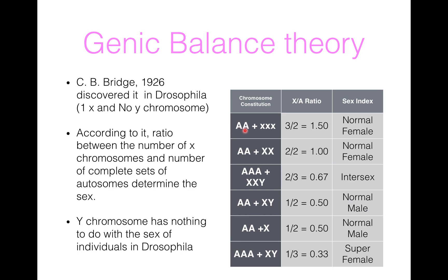Now we will understand the table. With two complete sets of autosomes (2A) and 3X chromosomes, the ratio is 3 by 2, which equals 1.5 — that is a super female. With two complete sets of autosomes and 2X chromosomes, the ratio is 2 by 2, which equals 1 — that is a normal female.